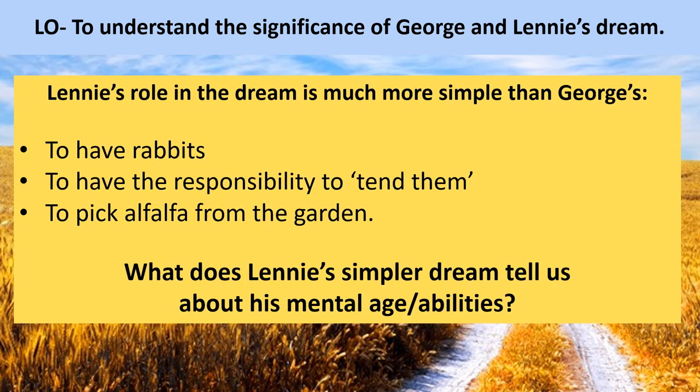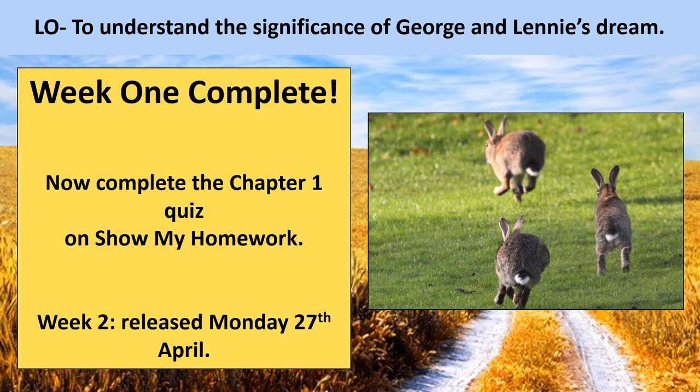Finally, bringing this week's lessons to a close: Lenny's role in the dream is much more simple than George's role. George seems to do most of the hard work, whereas Lenny's part of the dream is to have rabbits, to have responsibility, and to tend them, and to go and pick alfalfa — a kind of green leafy plant from the garden. Lenny's version of the dream tells us a lot about his mental age and his ability. The final thought for this lesson and this week is: how old mentally do you think Lenny really is? You've now completed week one of Of Mice and Men — well done. Go on to Show My Homework and complete the chapter one quiz. We'll be releasing week two's lessons on the 27th of April, that's next Monday. Hope you all keep safe and well between now and then. This is Mrs. Allen signing out.